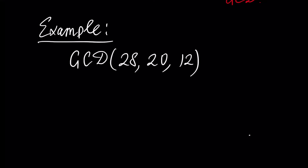By simple inspection we can see that number two divides all our numbers, and all our numbers are divisible by number two. Also, our numbers are divisible by number four, and number four is the biggest common divisor of our numbers. That's why the GCD of 28, 20, and 12 is four.